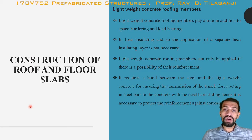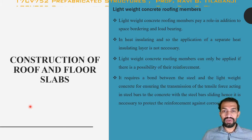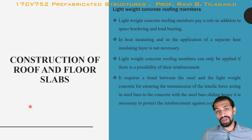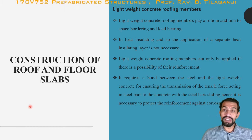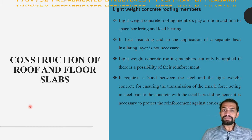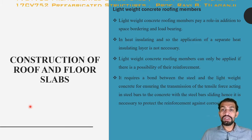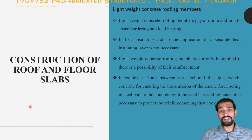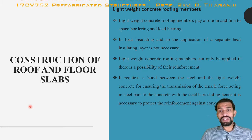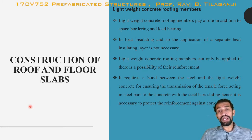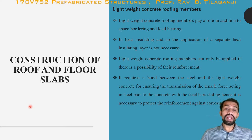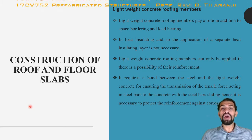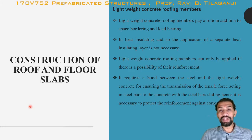The second type is lightweight concrete roofing members. These serve roles of space bordering and load bearing. Because wall loads carry less, roof slabs should be lightweight. Lightweight concrete is used as a roofing material because it also provides heat insulation, making a separate heat insulating layer unnecessary. Lightweight concrete absorbs heat but does not allow it to pass through, making it suitable for roofing members.